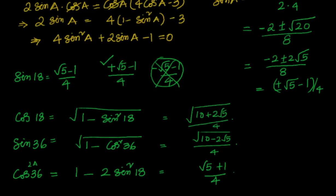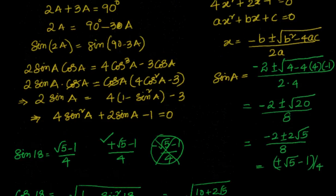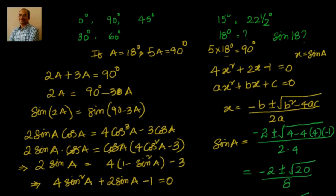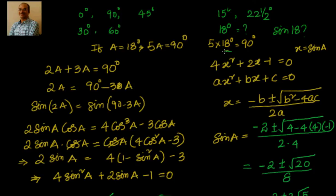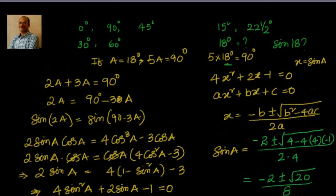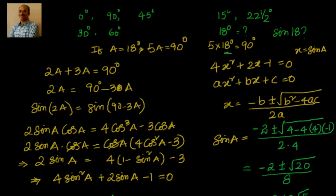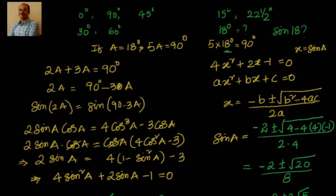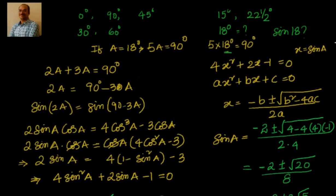You can check whether you are getting these values. This is how we can find out the values of 18 degrees, which is very important. The angles we are now aware of are: 0, 15, 22 and a half, 30, 45, 60, 67 and a half, and 18 degrees. In the next video we will do some more problems using multiple and sub-multiple angles. Thanks for visiting — bye for now.